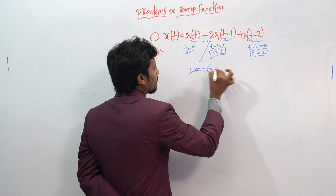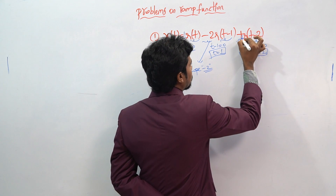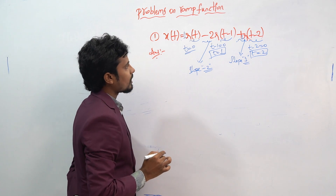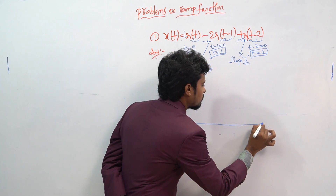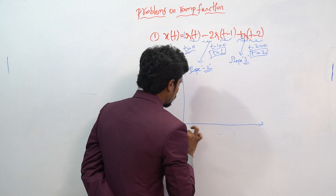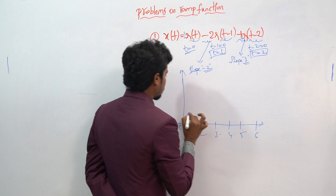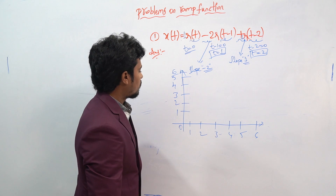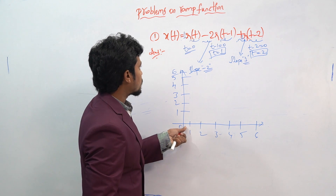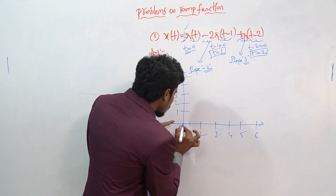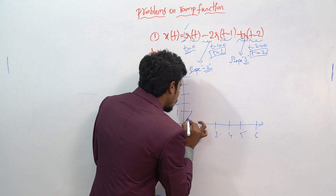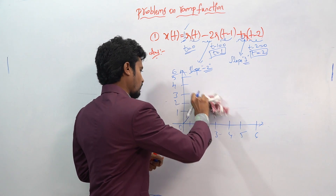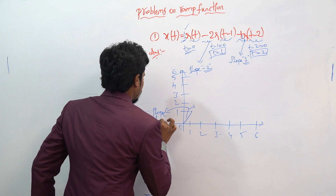The slope is minus 2 at t equals 1, and the slope is plus 1 at t equals 2. Let's draw the plot. Axis values: 0, 1, 2, 3, 4, 5, 6 and amplitude values 1, 2, 3, 4, 5, 6. At t equal to 0, we increase the slope by 1 unit.